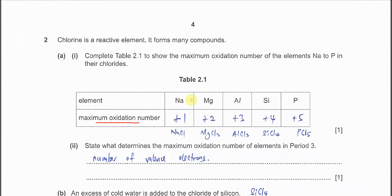We know that sodium reacts with chlorine to form sodium chloride, magnesium will form magnesium chloride, aluminum will form aluminum chloride AlCl3, silicon will form SiCl4.